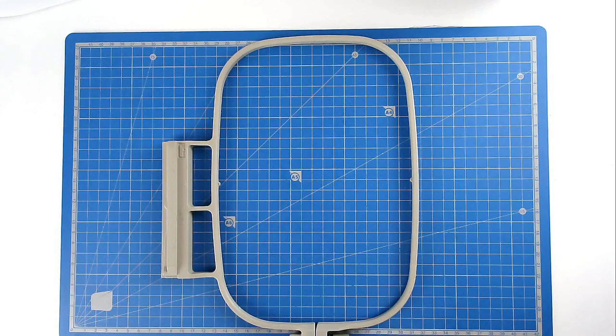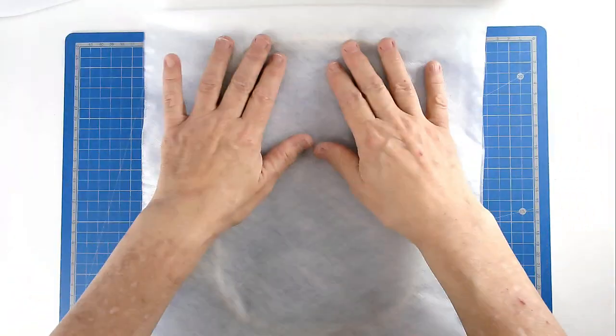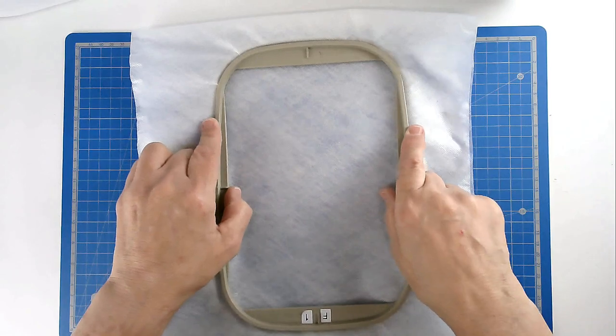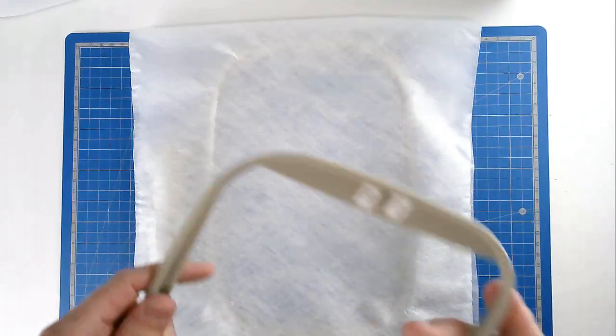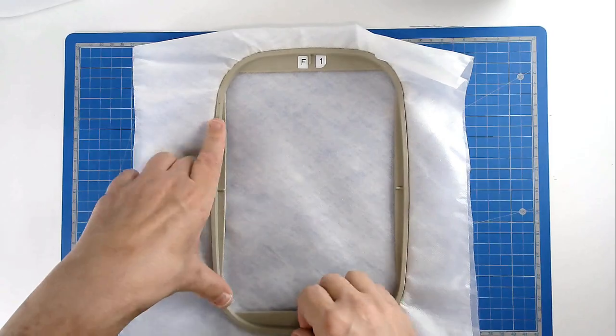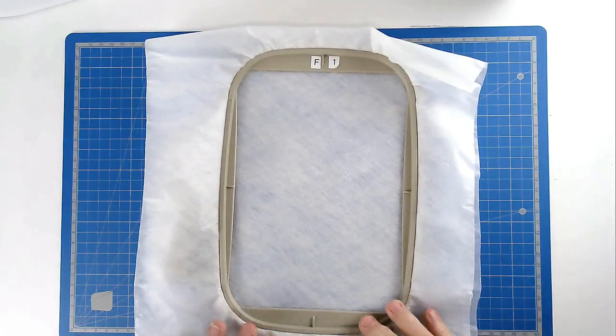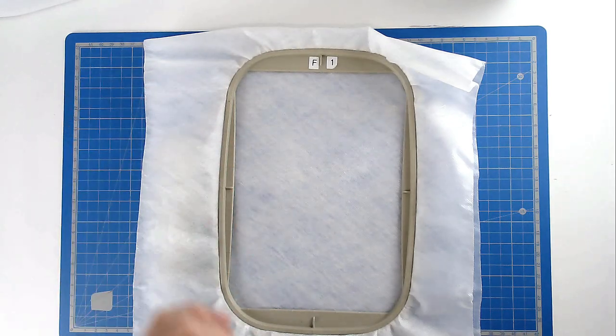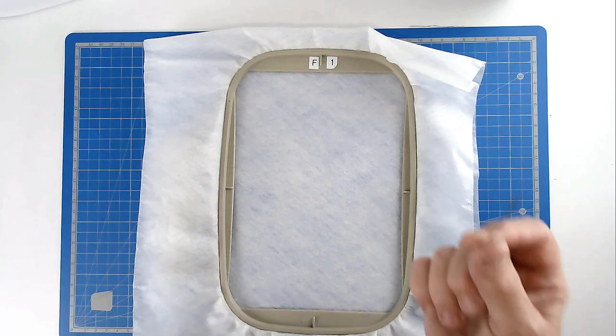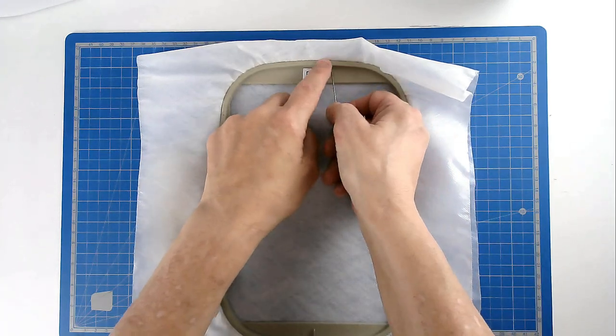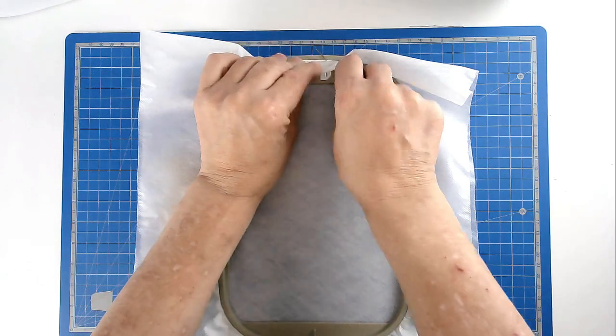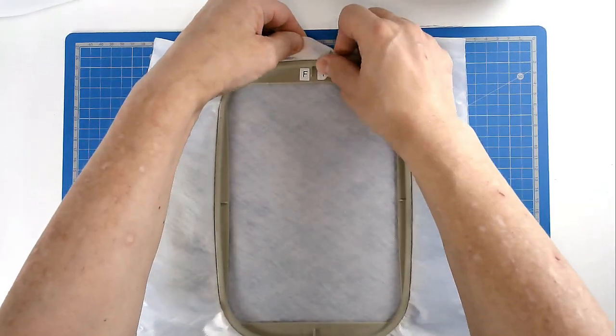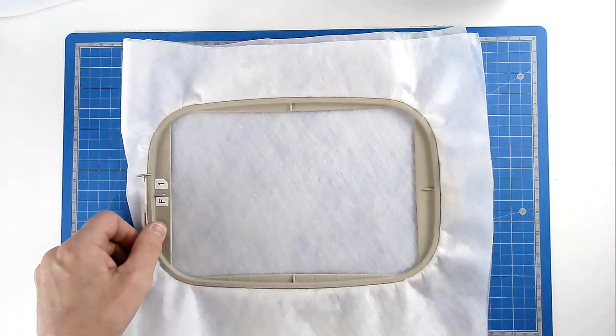Take your two layers of wash away stabilizer, place them over the outer hoop, insert the inside frame. Then we're going to pin around the edge of our hoop, and this is important because it stops the stabilizer from being pulled down between the two hoop pieces, and on a larger hoop that's more important than ever. So take your pin, rest it on the inside hoop frame, push it through your stabilizer, bring it back round and through the stabilizer again, and that will anchor it, and you're going to do that on all four sides.